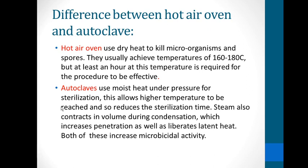In the case of autoclaves, they use moist heat under pressure for sterilization. The difference is: hot air oven uses dry heat, while autoclave uses moist heat under pressure. This allows higher temperatures to be reached, which reduces the sterilization time — the higher the temperature, the less the time, so they are inversely proportional.